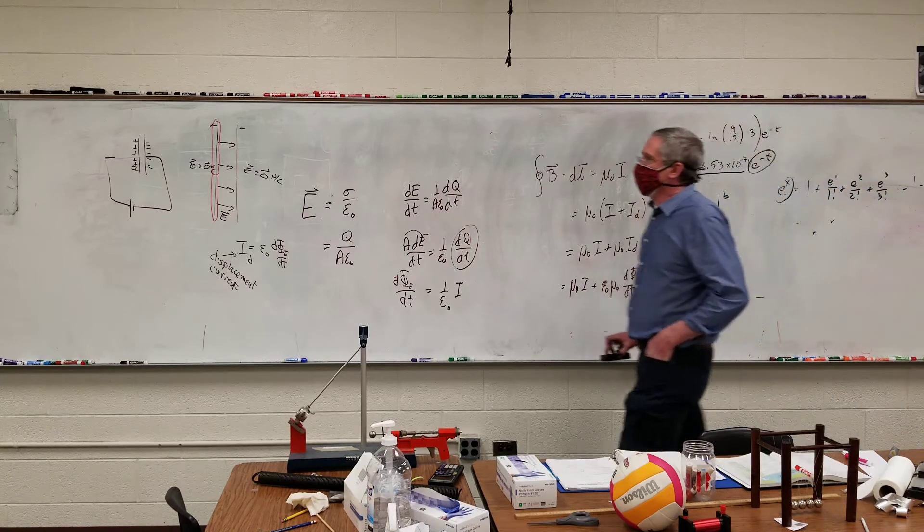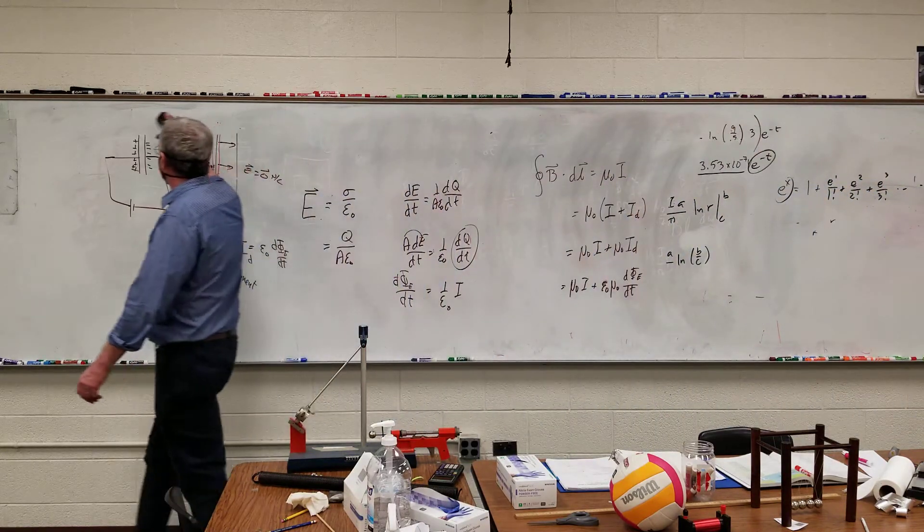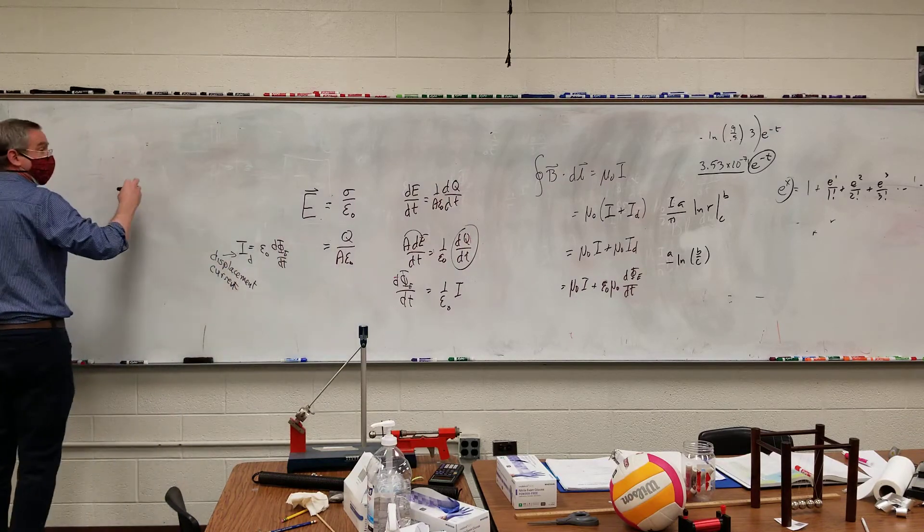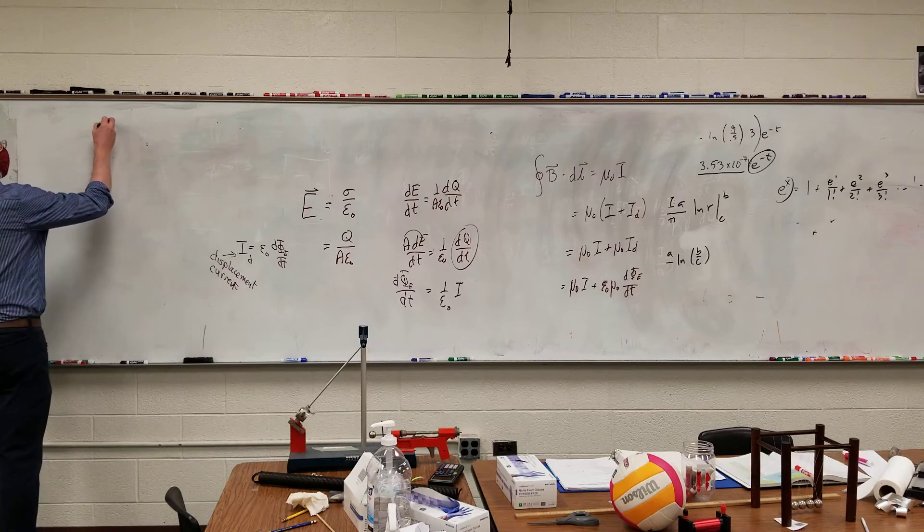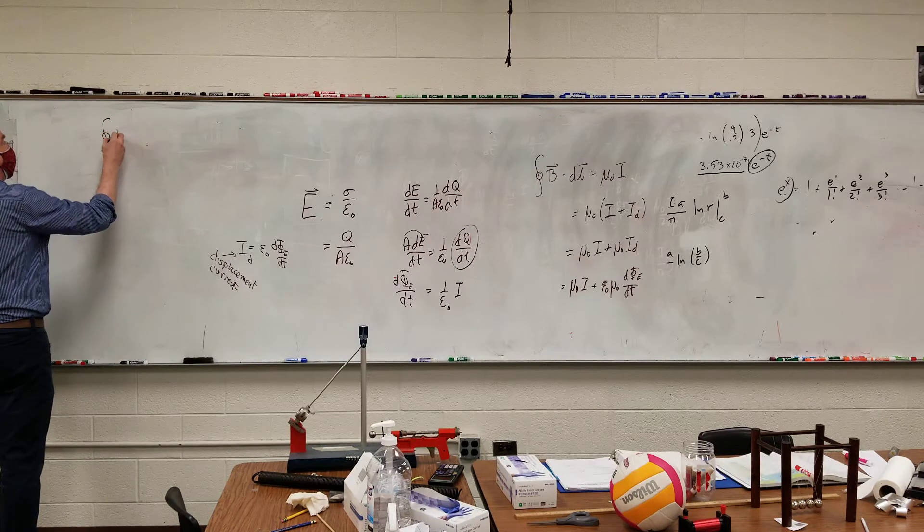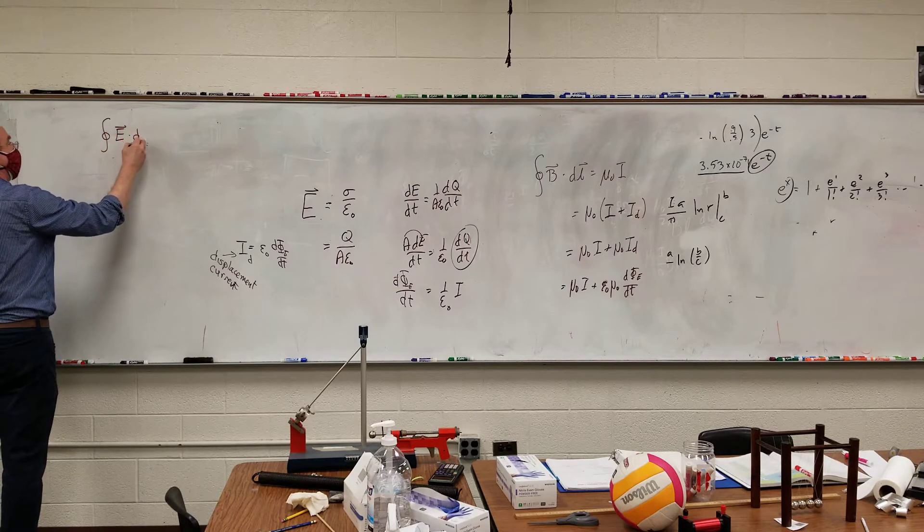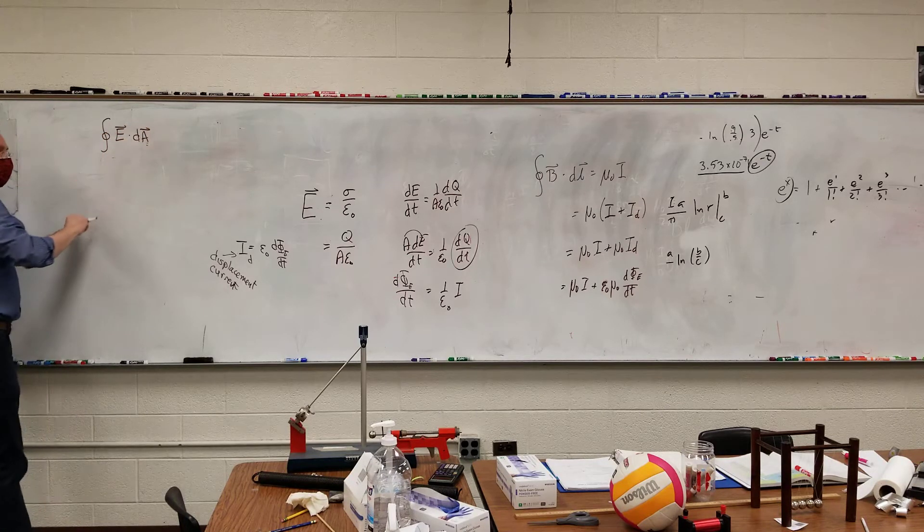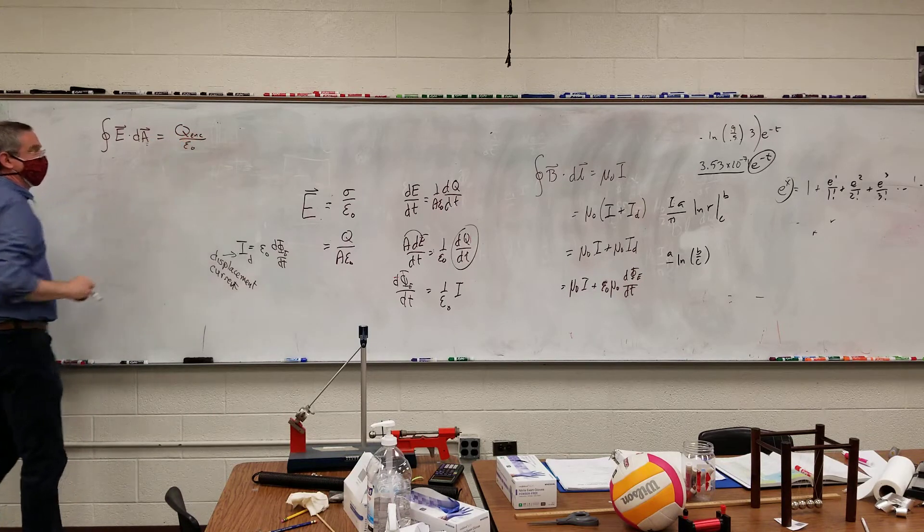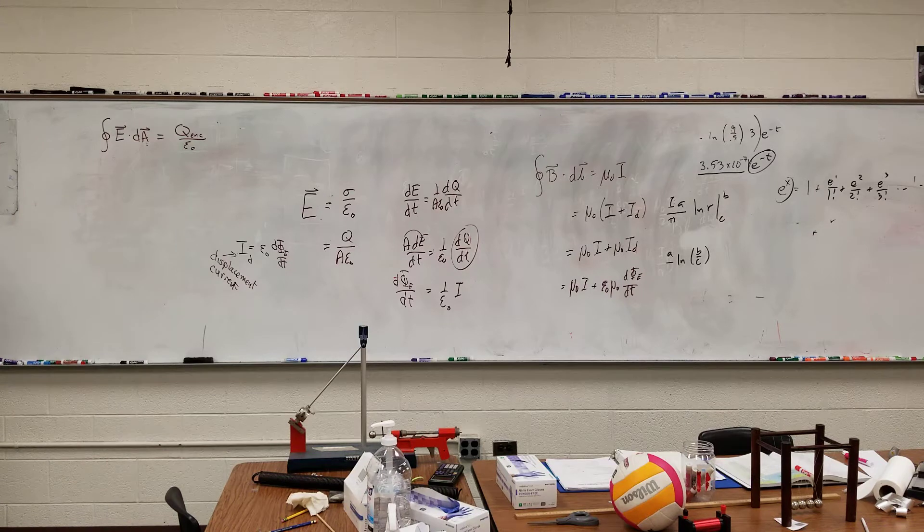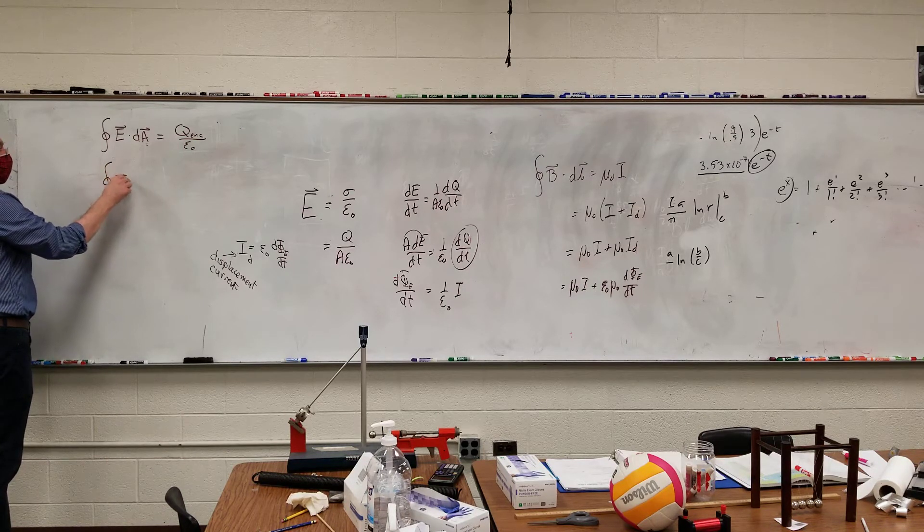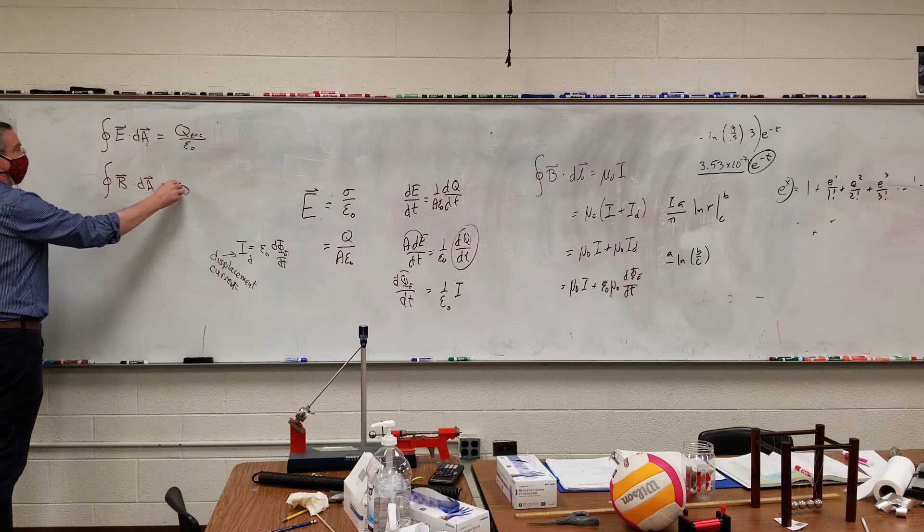So we can now bring together the four horsemen of electromagnetism. My electric flux through a closed surface is equal to enclosed charge over epsilon sub-naught, or epsilon if there's a dielectric.